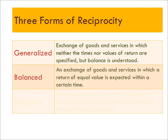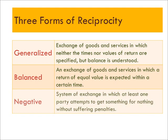Balanced reciprocity is very different. In balanced reciprocity, if I give a gift, I expect a gift of equal value in return. The third kind is negative reciprocity — a system of exchange in which at least one party attempts to get something for nothing without suffering any particular penalties.